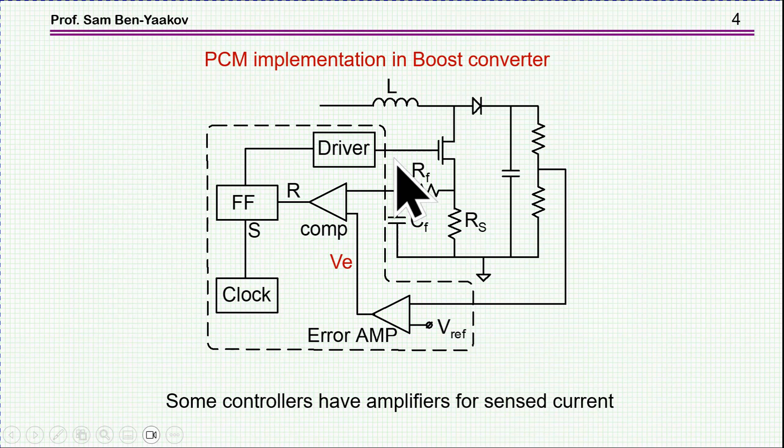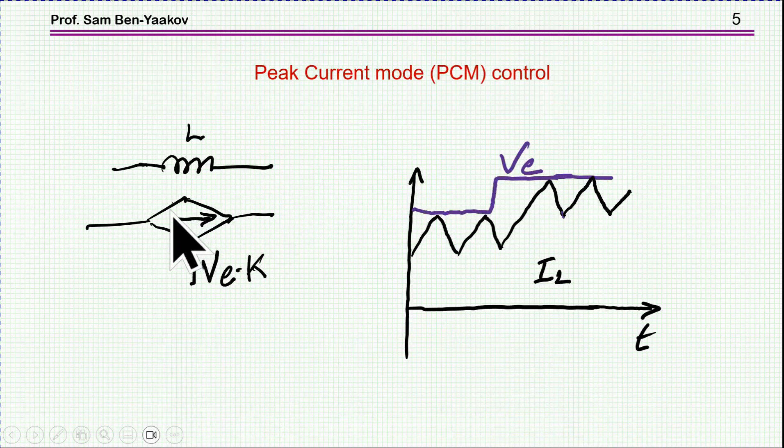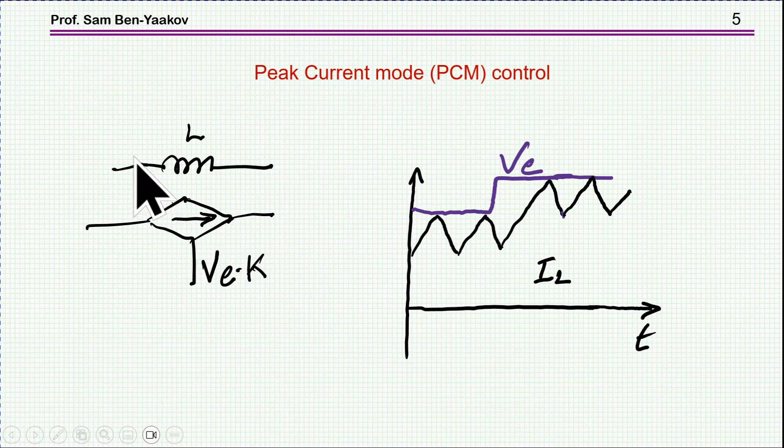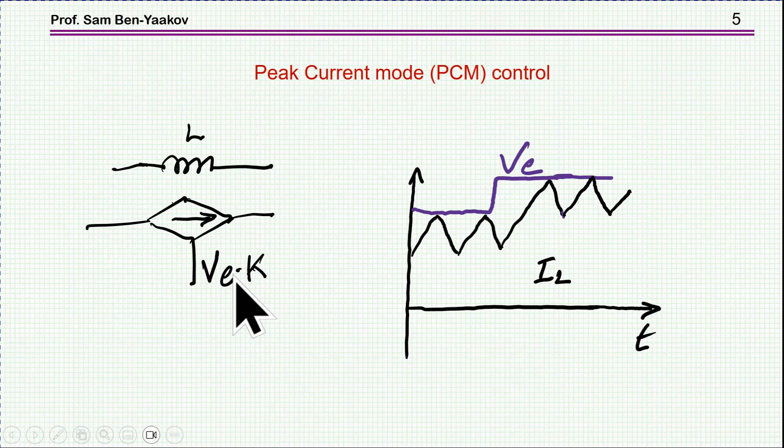One of them is that it has the so-called cycle-by-cycle current protection. But another important aspect is that now we are actually removing the inductor and replacing it by a current source, because now the current in this branch is following V sub E. So, in fact, we are reducing the order of the system from a second order, that is, the inductor plus the output capacitor, to a first order, just a current source and a capacitor, or at high frequency, it will be the ESR of the capacitor. So this is very beneficial, because it simplifies the control, makes it more robust, and it's less sensitive to variation, like a change in a capacitor.